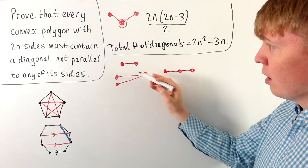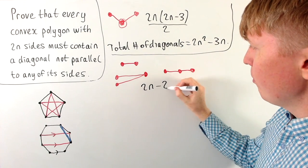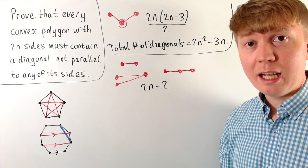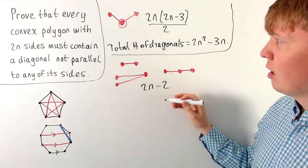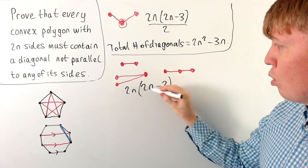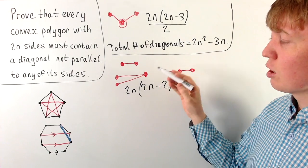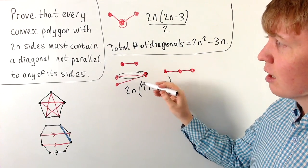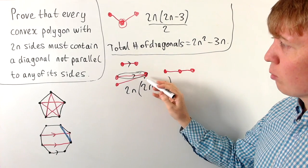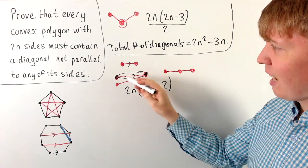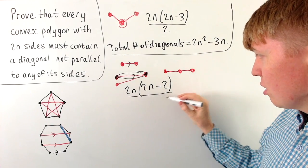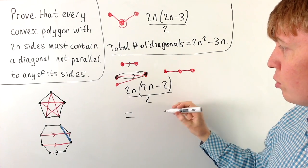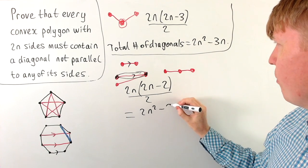So for the 2n minus 2 vertices not on a given edge, each can be involved in at most one diagonal parallel to that side. For each of our 2n sides, we therefore have at most 2n minus 2 diagonals which could be parallel to it. But once again we've double counted — each diagonal is counted once for each of its two endpoints — so we divide by 2, giving an upper bound of 2n times (2n minus 2) divided by 2, which expands to 2n² minus 2n.